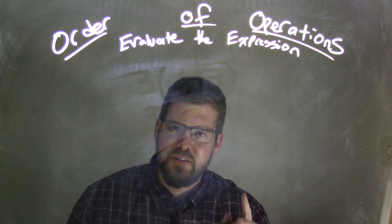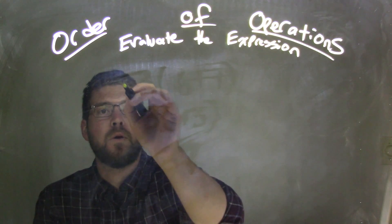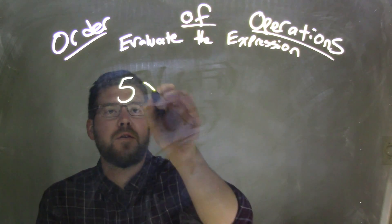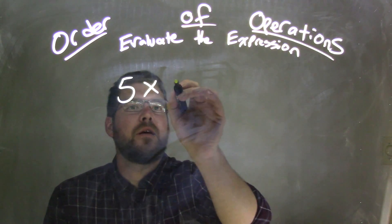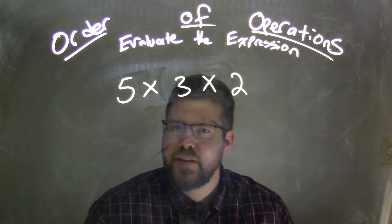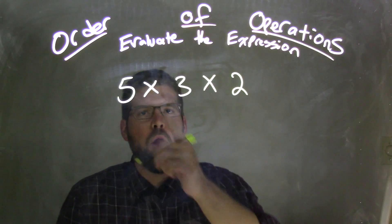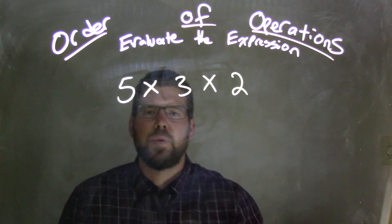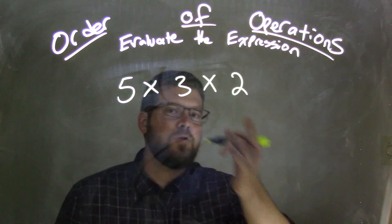So if I was given this expression, 5 times 3 times 2. If I was given 5 times 3 times 2, they're all multiplications separated by multiplications.